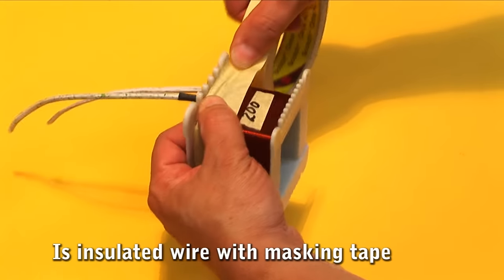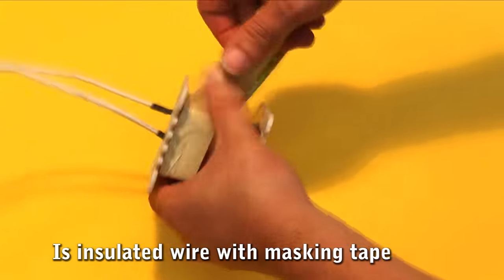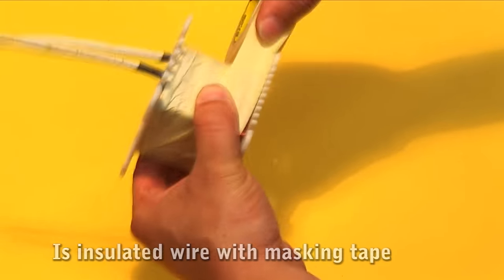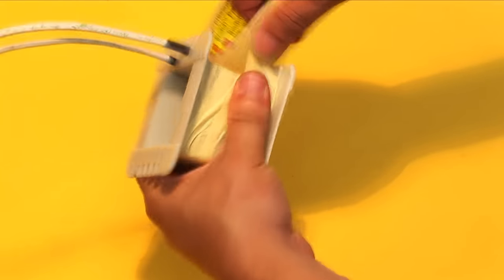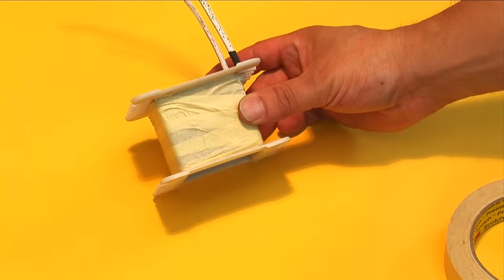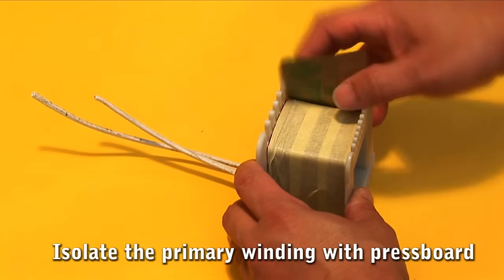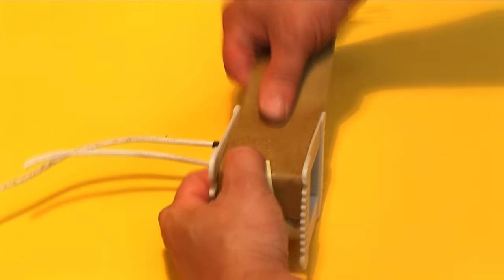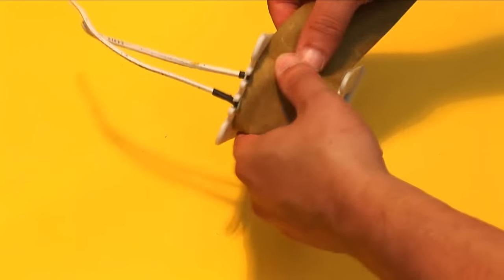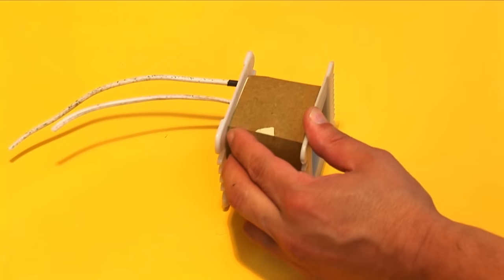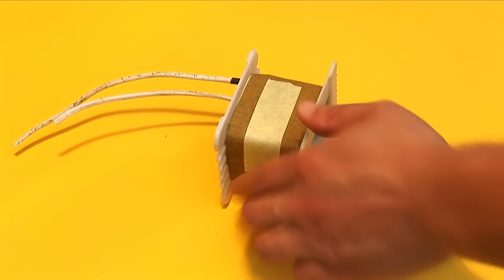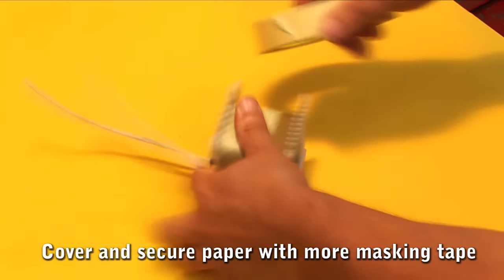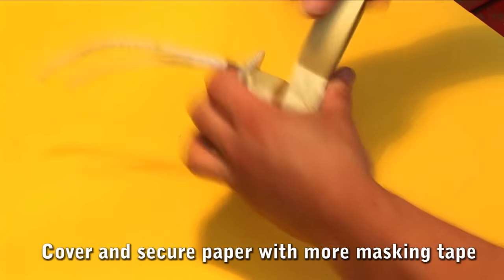Insert the cord into an outlet slot. Isolating the primary winding. The primary and the secondary windings are isolated from each other with masking tape and wax paper or pressboard. The wax paper should cover the entire wire and secure with masking tape. Then the paper is covered with more tape. Make sure there are no spaces through which the primary can touch the secondary winding.